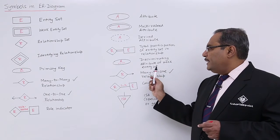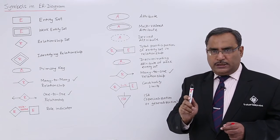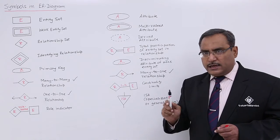Discriminating attribute of weak entity set, that is the partial key, will be denoted by a dashed underline.